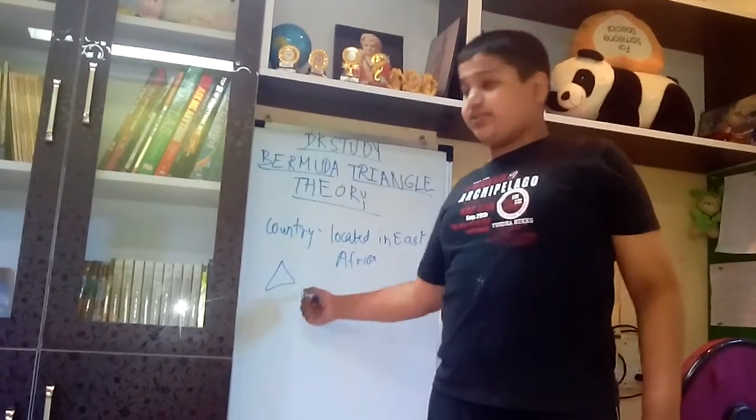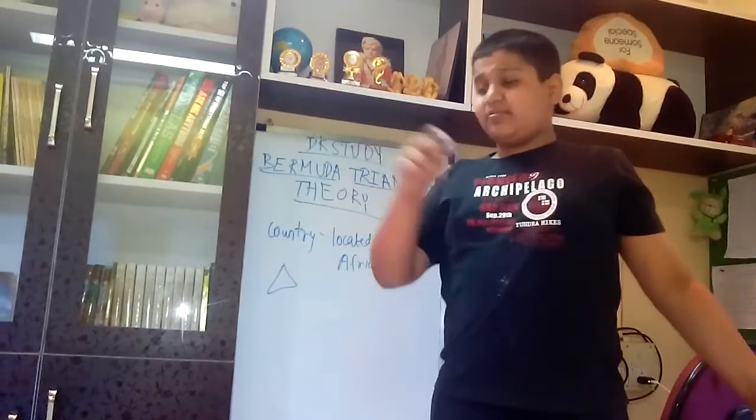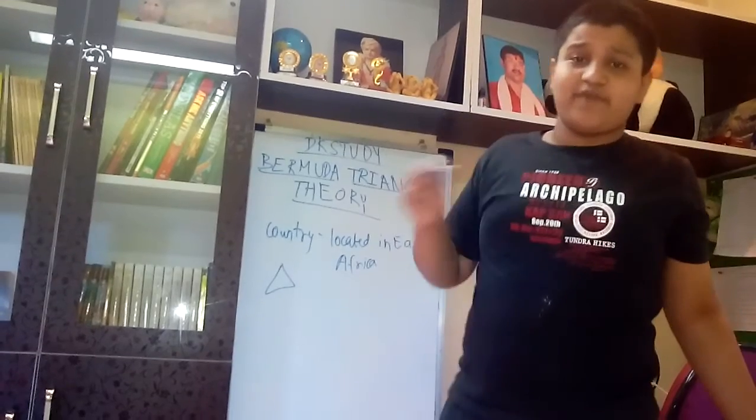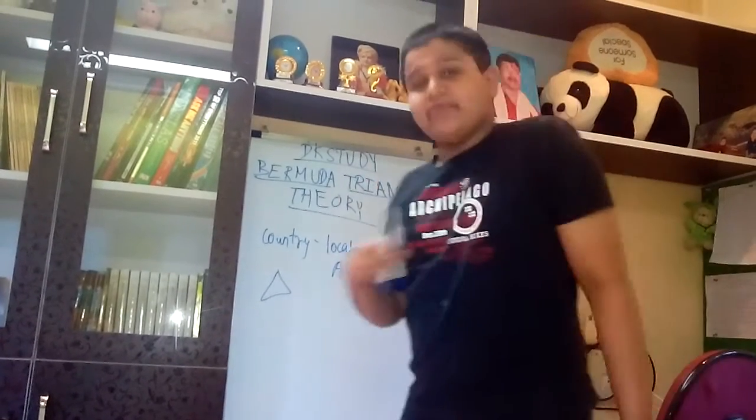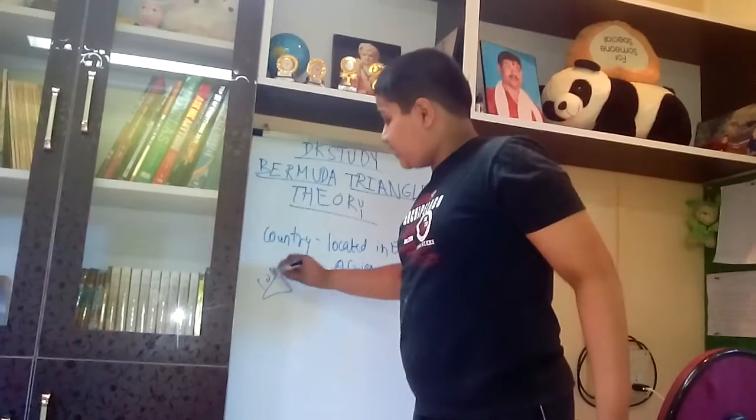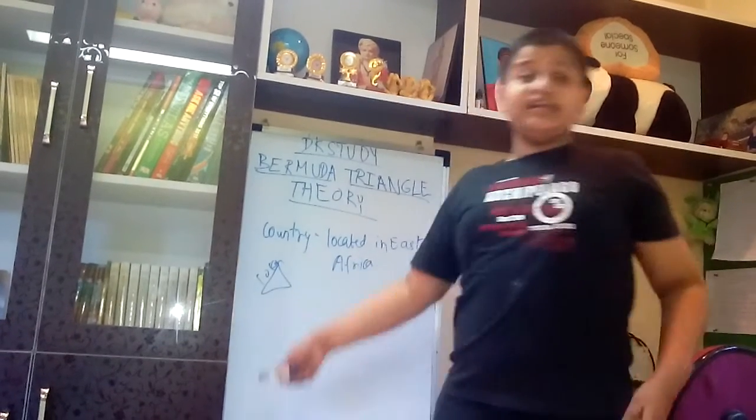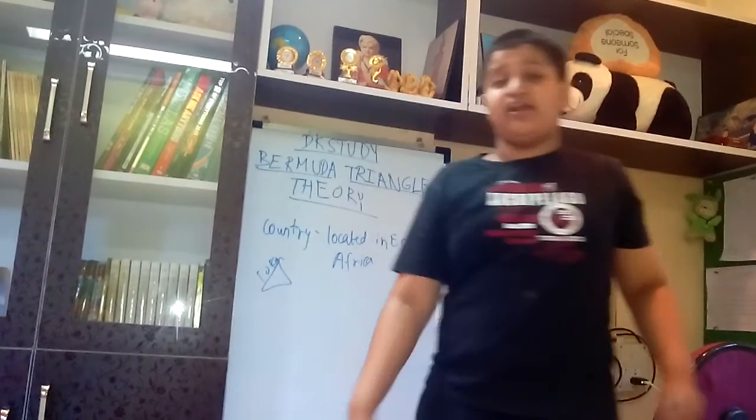So it is close to the sea and it has a triangle-shaped water body near it which is known as the Bermuda Triangle. It is about 10 km in length and it has many mysterious secrets along it.